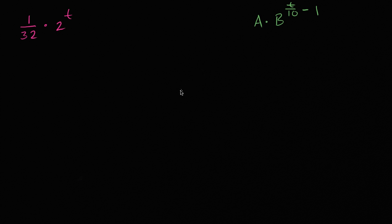So I'm assuming you took a go at it, so let's try to do it together. The first thing I want to do is take this t and get it into a t over 10. So to do that, we essentially just need to multiply by 10 and divide by 10. Then we haven't changed the value up here.